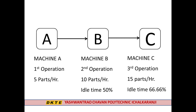The first operation is machine A and its cycle time. The second operation is also related to machine A's cycle time. Machine B handles the first and second operations, and the third operation involves machine V, with parts per hour for the second operation of machine B. Machine C has a capacity of 15 parts per hour for the third operation.